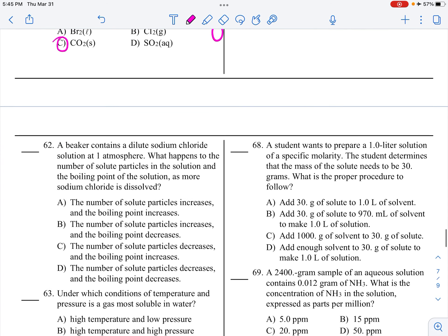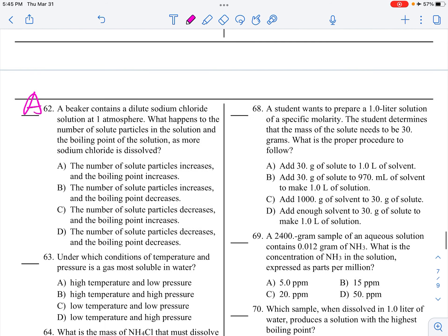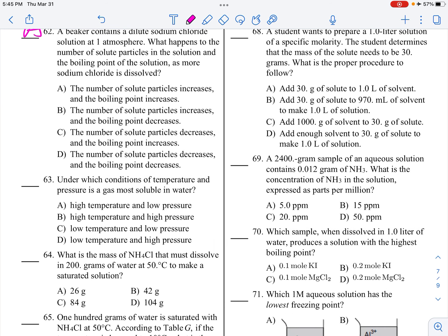A beaker contains dilute sodium chloride solution at one atmosphere. What happens to the solute particles as the boiling point is measured? When you're adding more solute dissolves, the number of solute particles will increase, and everything will be more extreme. So the boiling point will increase. Under which conditions is a gas most soluble in water? That's going to be high pressure and low temperature, which is the opposite of the beach.